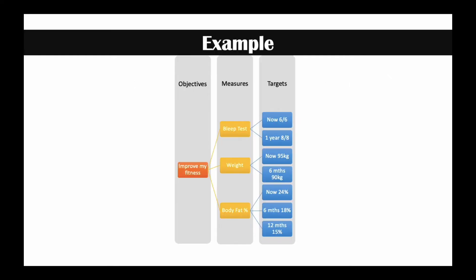So let's look at an example. If I want to improve my fitness, that's my overarching objective — to improve my fitness. It's large in scope and not brilliantly defined; I just want to improve my fitness. So what do I mean by improve? What do I mean by fitness? What are some of the measures I could use that would give me an indication? We often need a basket of measures to help define an objective, because one measure just won't do it.